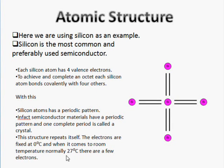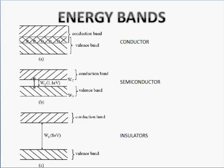At 27 degrees Celsius, that little amount of energy is made available. Now it's time to compare the three: conductors, semiconductors, and insulators according to their energy band diagrams. This will also answer some questions that may arise when we are discussing semiconductors.